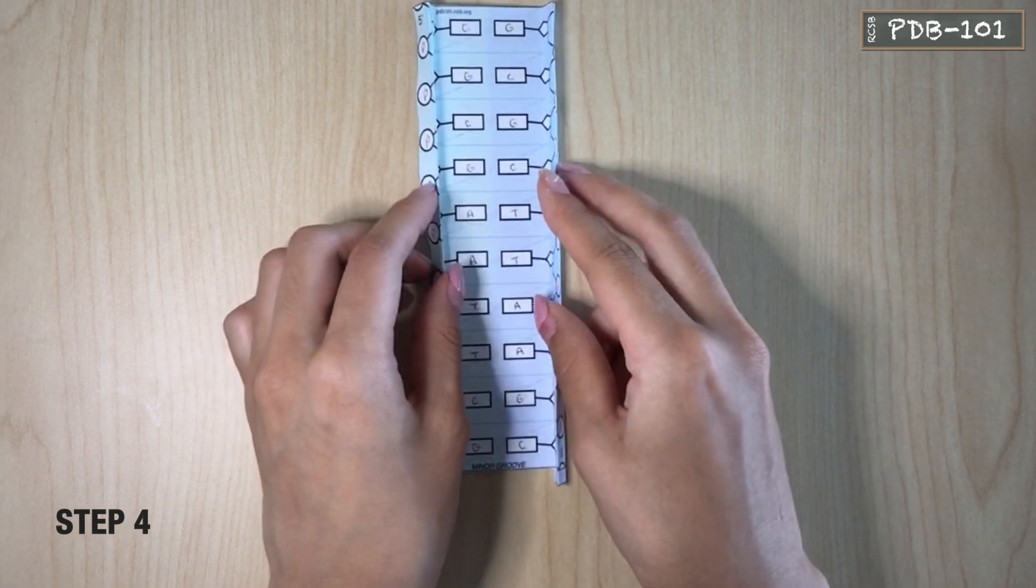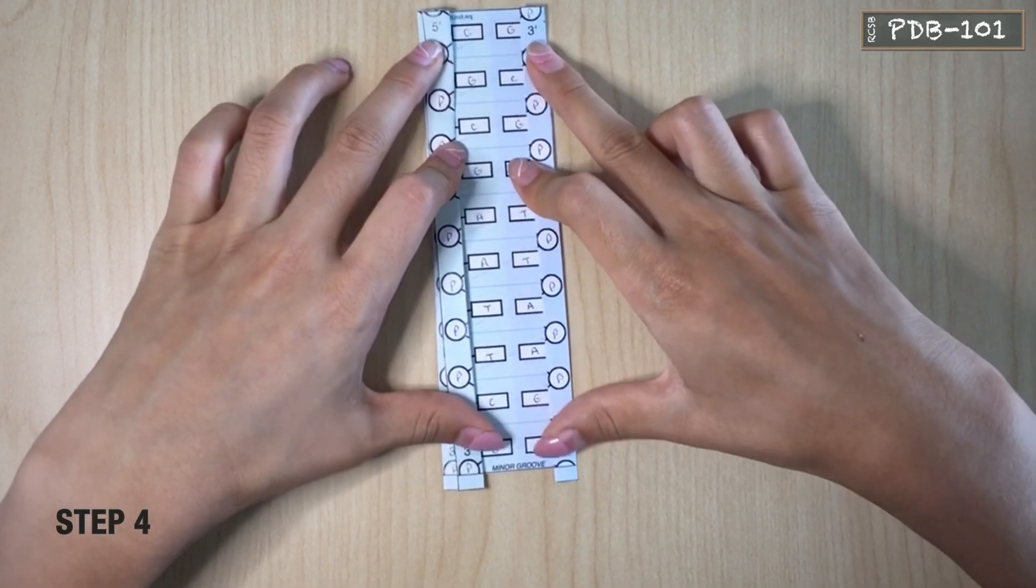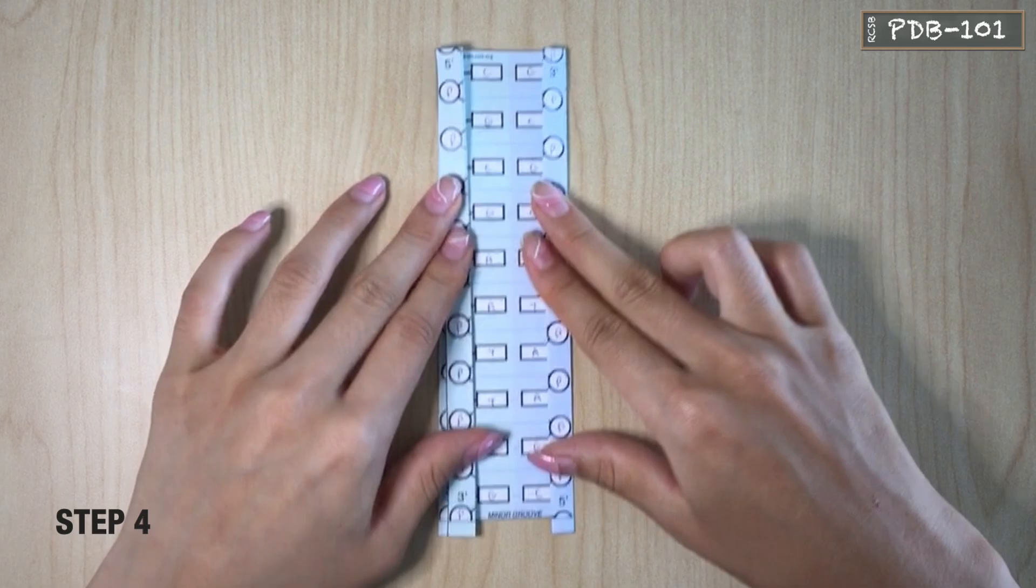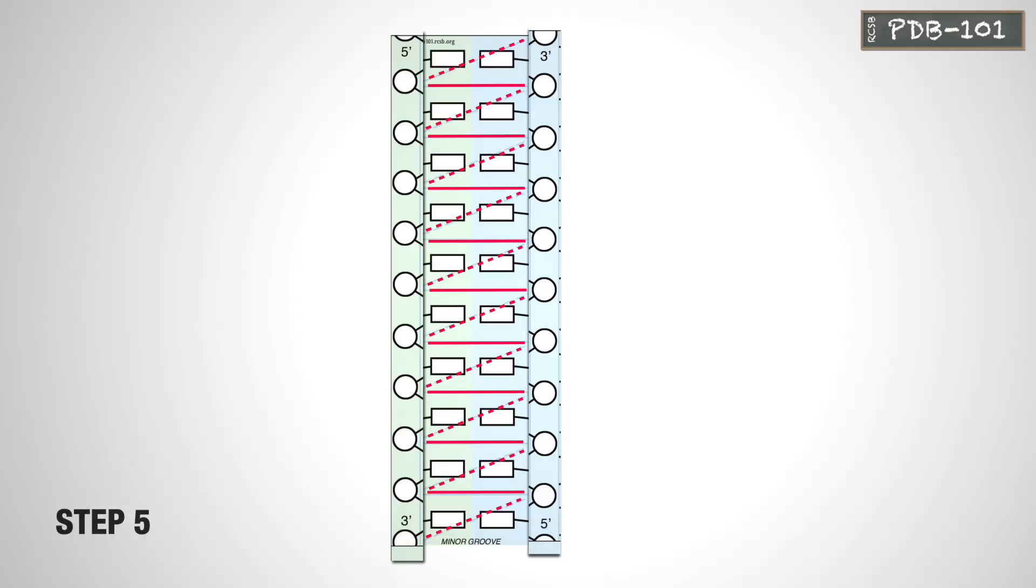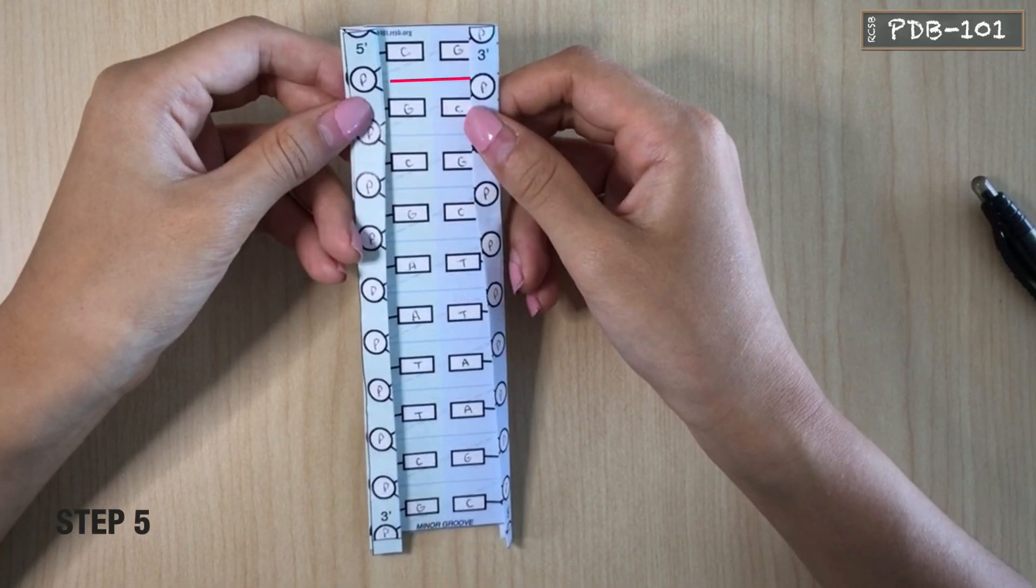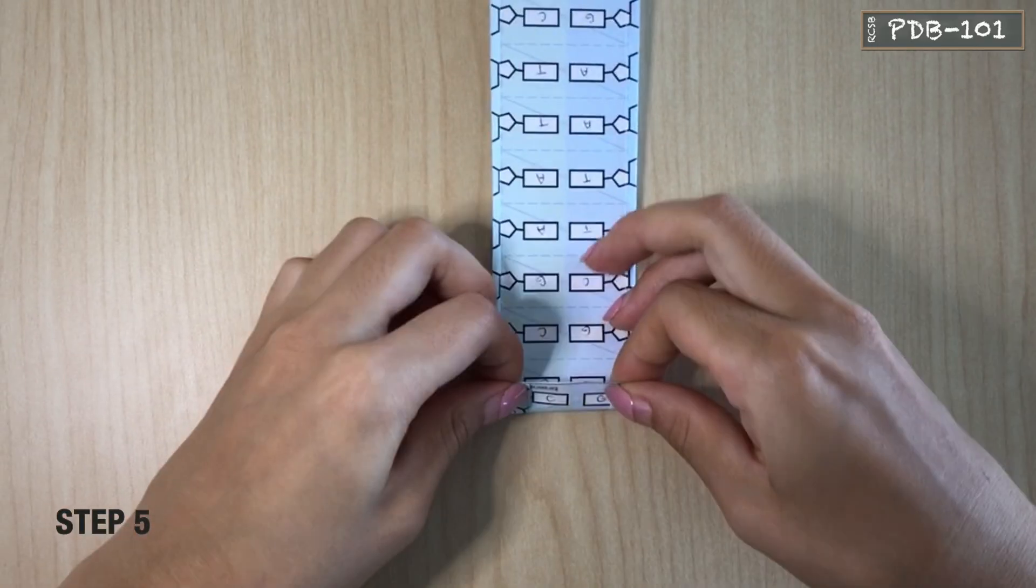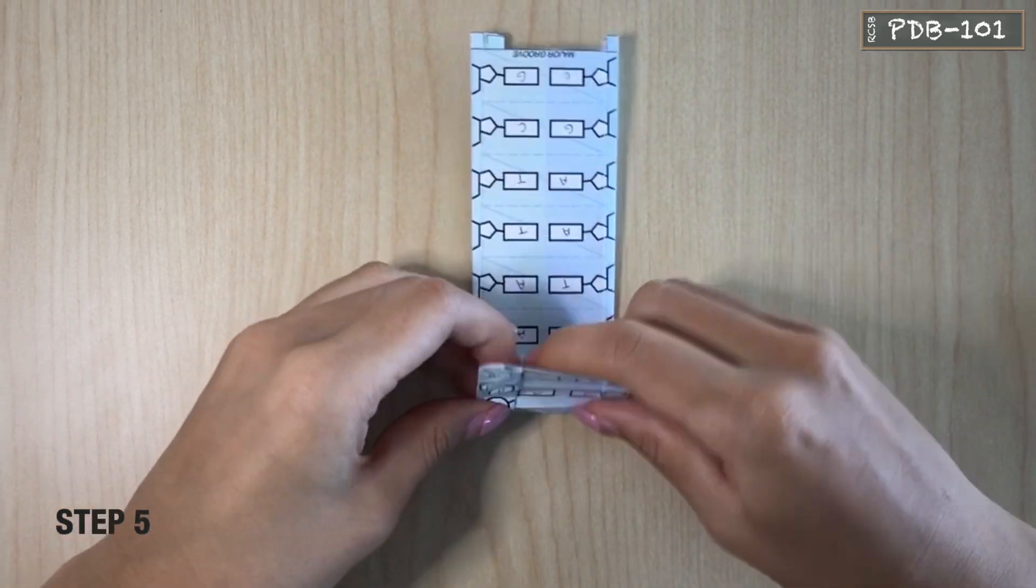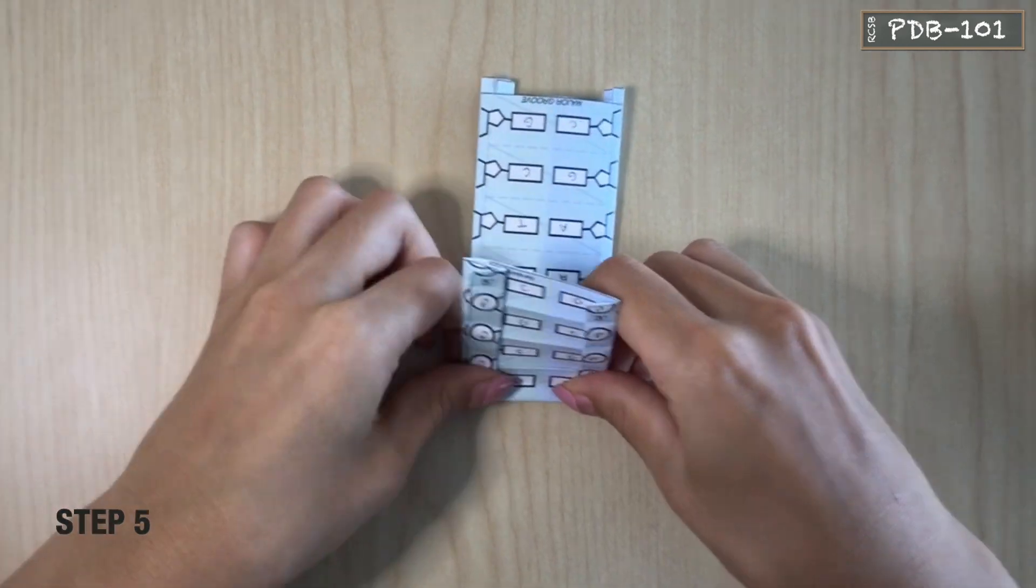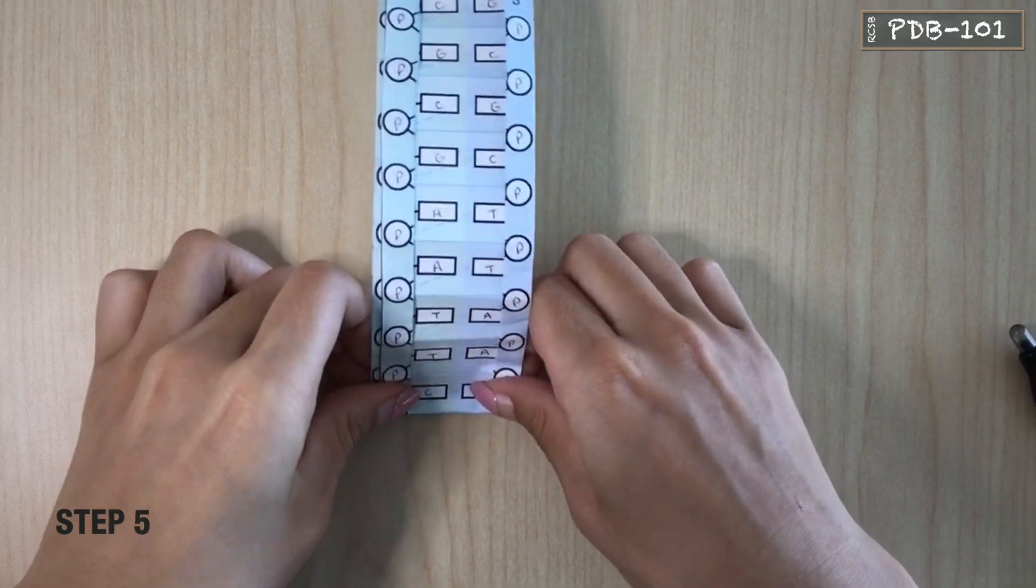Next, temporarily fold the backbones so that the model is flat. Crease the horizontal and diagonal lines. Solid lines should be visible on the top edge of each crease with dotted lines on the inside. You can crease them in any order you like, folding and unfolding each in turn.